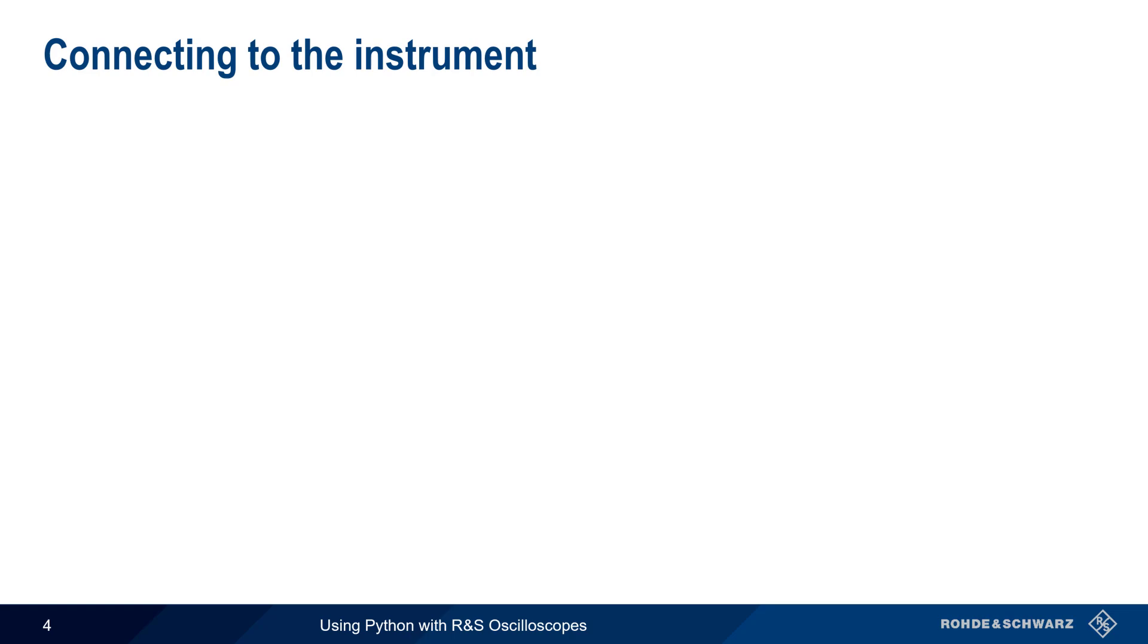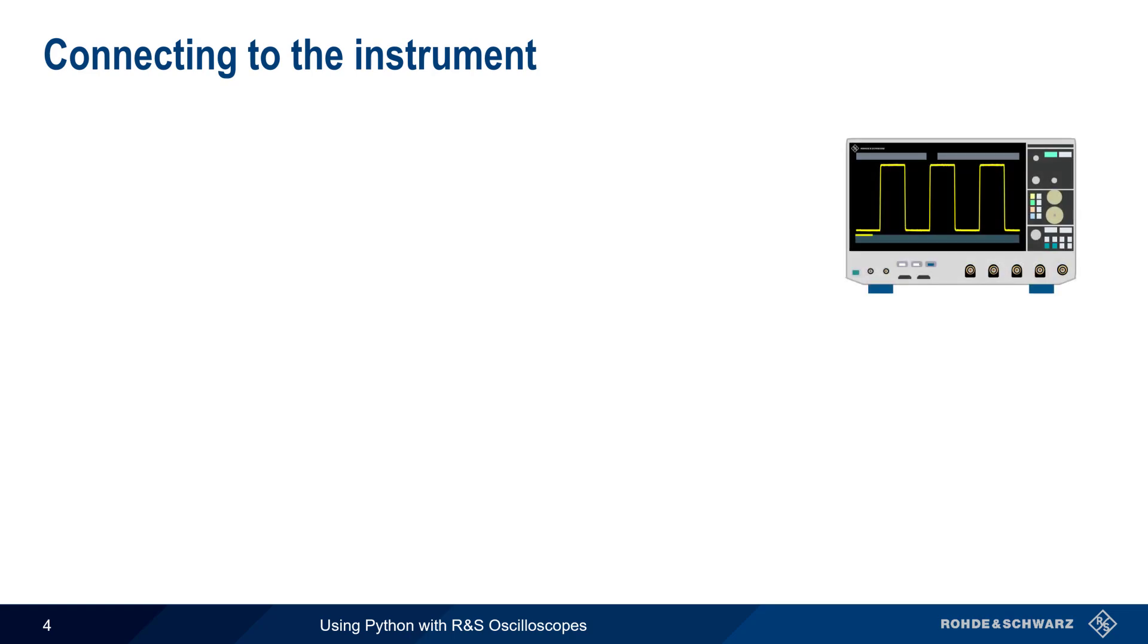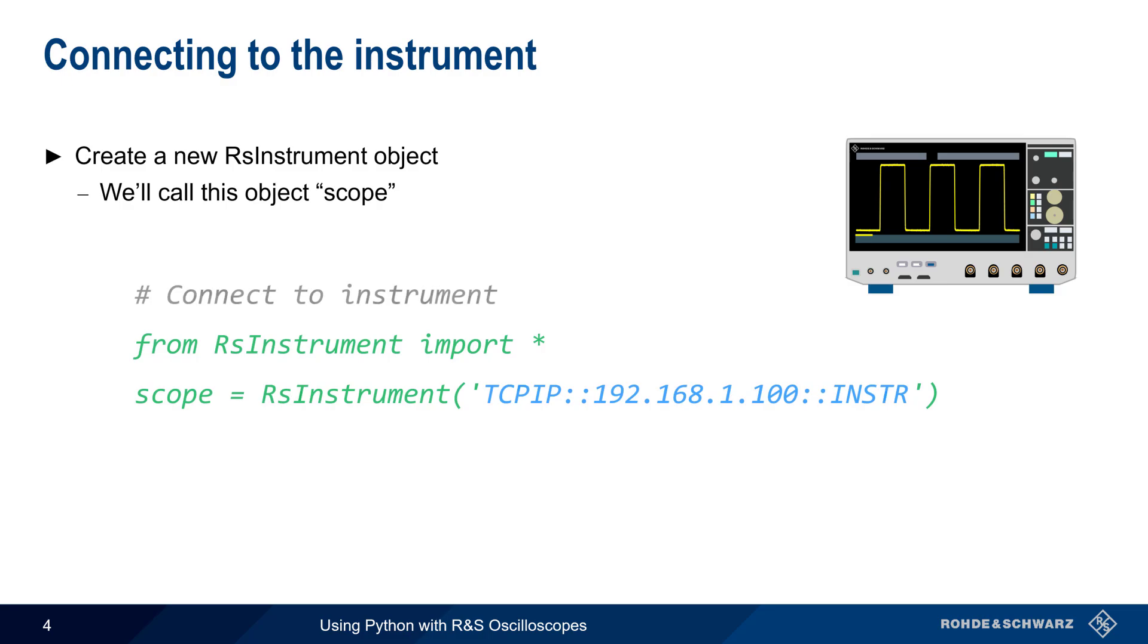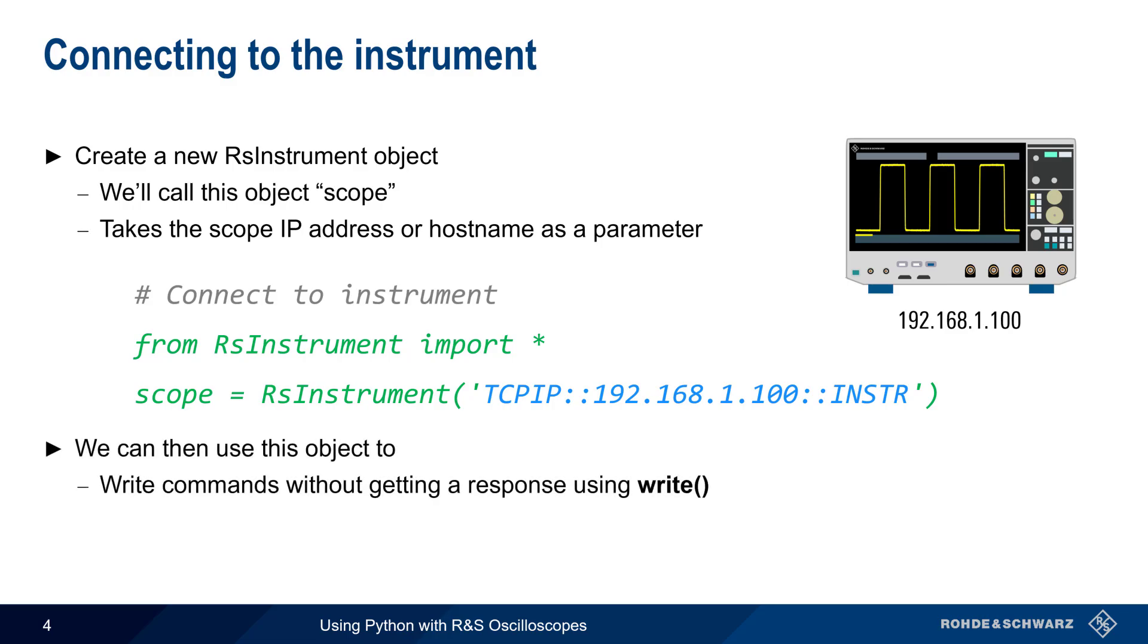Once these are installed, we can connect to our instrument, here an MXO series oscilloscope, by creating a new RsInstrument object, which we'll call scope. The IP address or hostname is passed as a parameter. We can then use write() to write commands without getting a response, and we can use query() to both query the instrument and receive a response. Let's look at some simple examples of how these two functions are used.